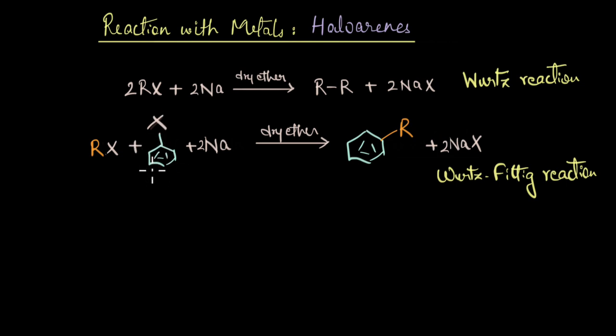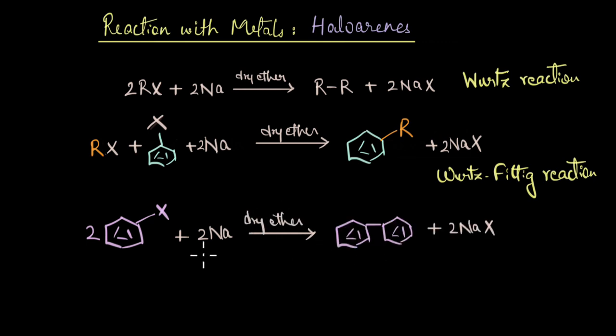Finally, if you replace two alkyl halides with two aryl halides, in that case we obtain a diphenyl as a final product, and this reaction is called Fittig reaction. As you can see, these are all derivatives of the Wurtz reaction.